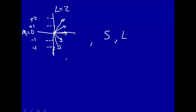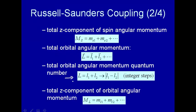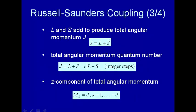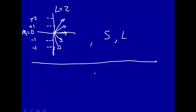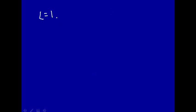Now we want to couple S and L — add them vectorially to get J. We do the exact same thing we did before: J can go from L plus S down to the absolute value of L minus S in integer steps. Let's take an example: big L equal one and big S equal one half.